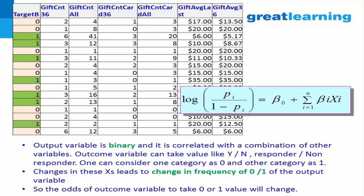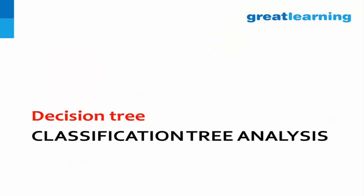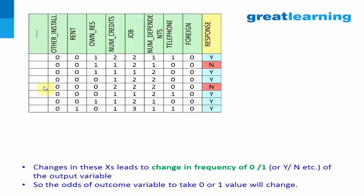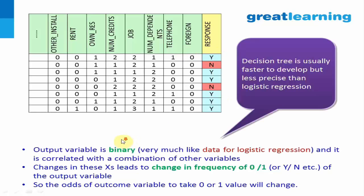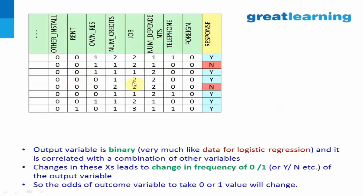In one line: you apply logistic regression when your dependent variable is categorical in nature — 0 or 1 — not a numeric variable. Now, a classification tree: this data is similar to logistic regression — your dependent variable takes value Y or N. In fact, all scenarios where you can apply logistic regression, you can also apply a classification tree. You have a binary dependent variable, and changes in the independent variable values change the frequency of Y or N.